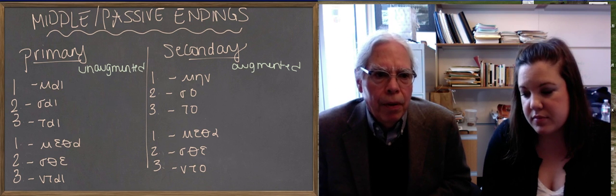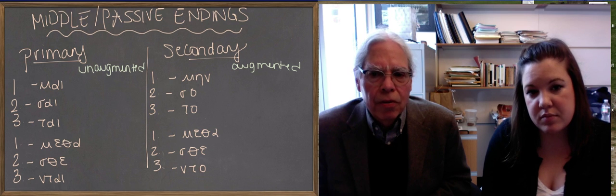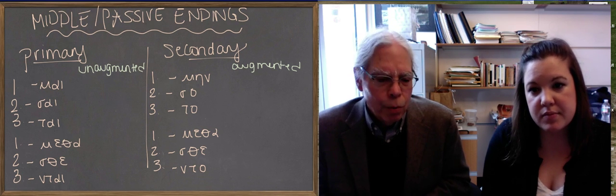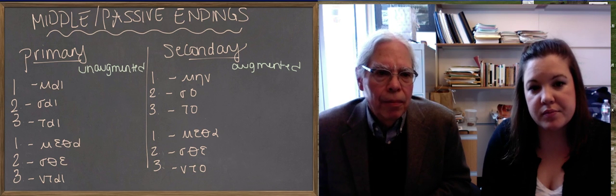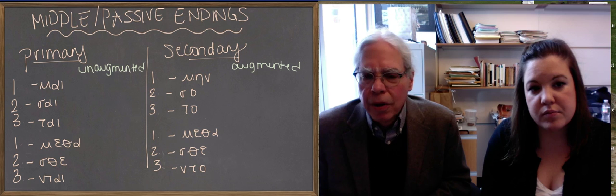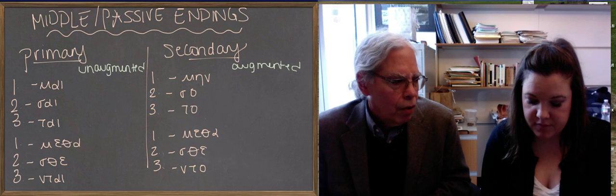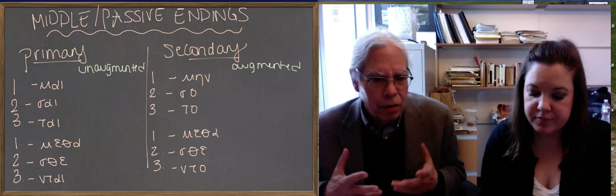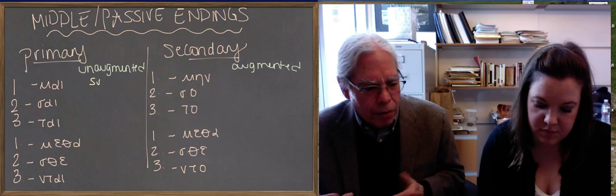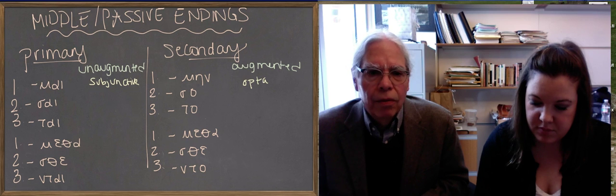So what we put up on the blackboard is the middle/passive endings, the endings which are the same for both middle and passive. You can see that they're divided between what we call primary, the book calls primary, and what we call secondary. The primary endings go for un-augmented verbs, the secondary for augmented verbs. The other thing that we can add is that the primary endings work for subjunctives in Greek, and the secondary endings work for optatives, because we've seen this association before between primary or present tense with the subjunctive and secondary or past tenses with the optative.